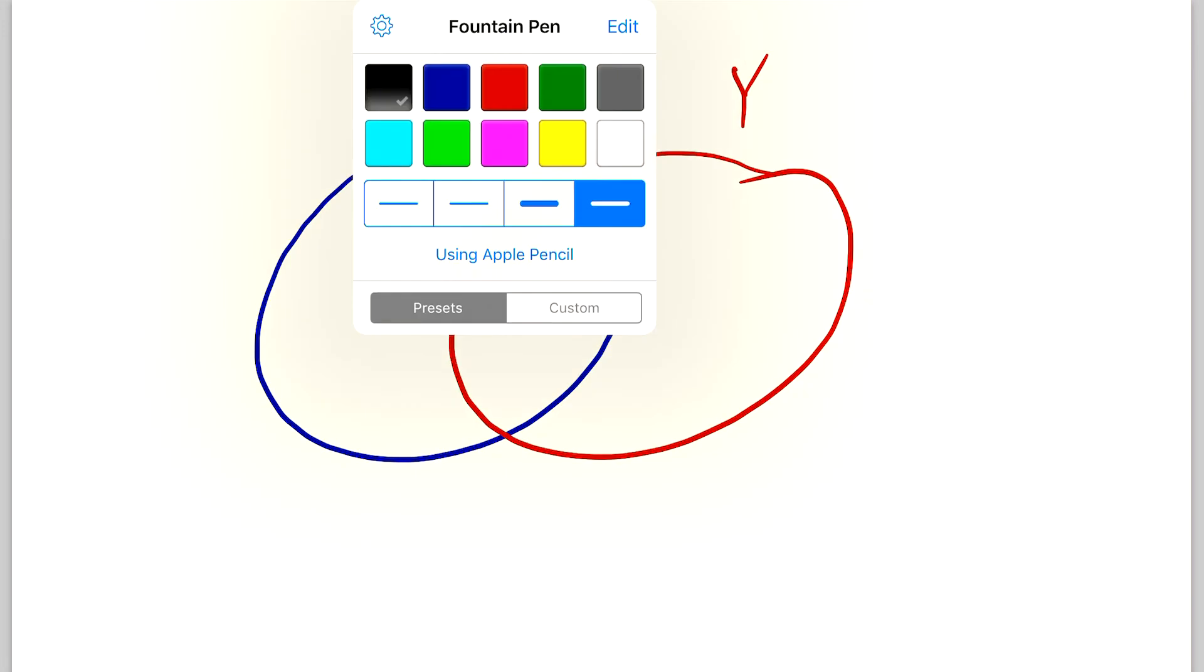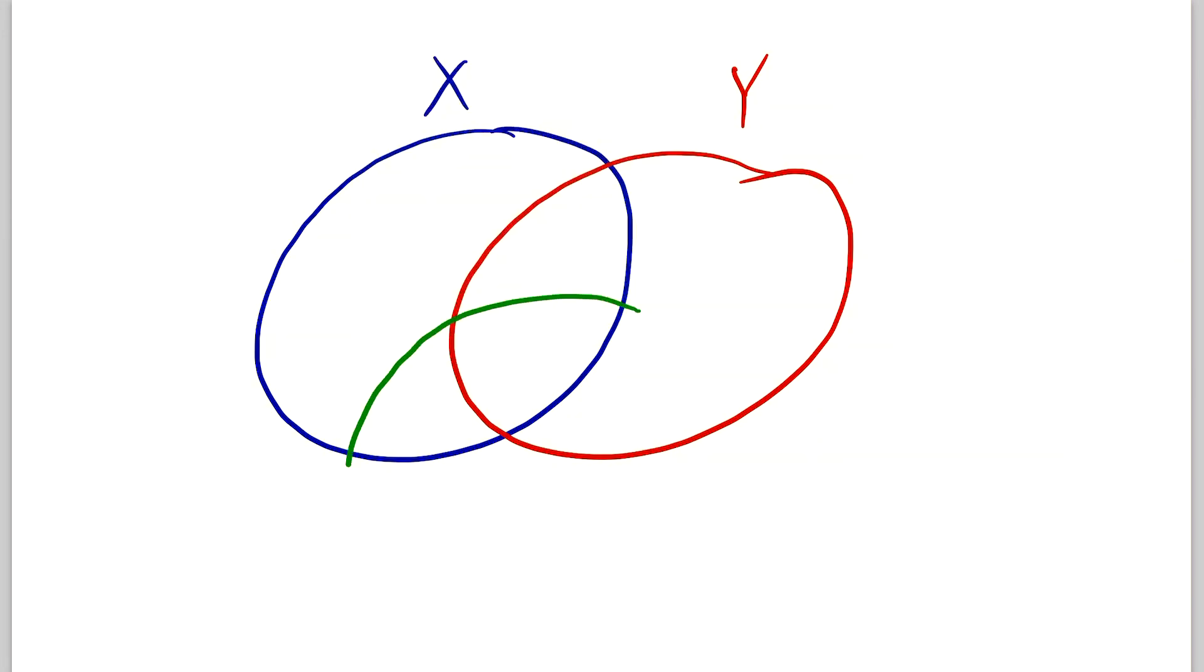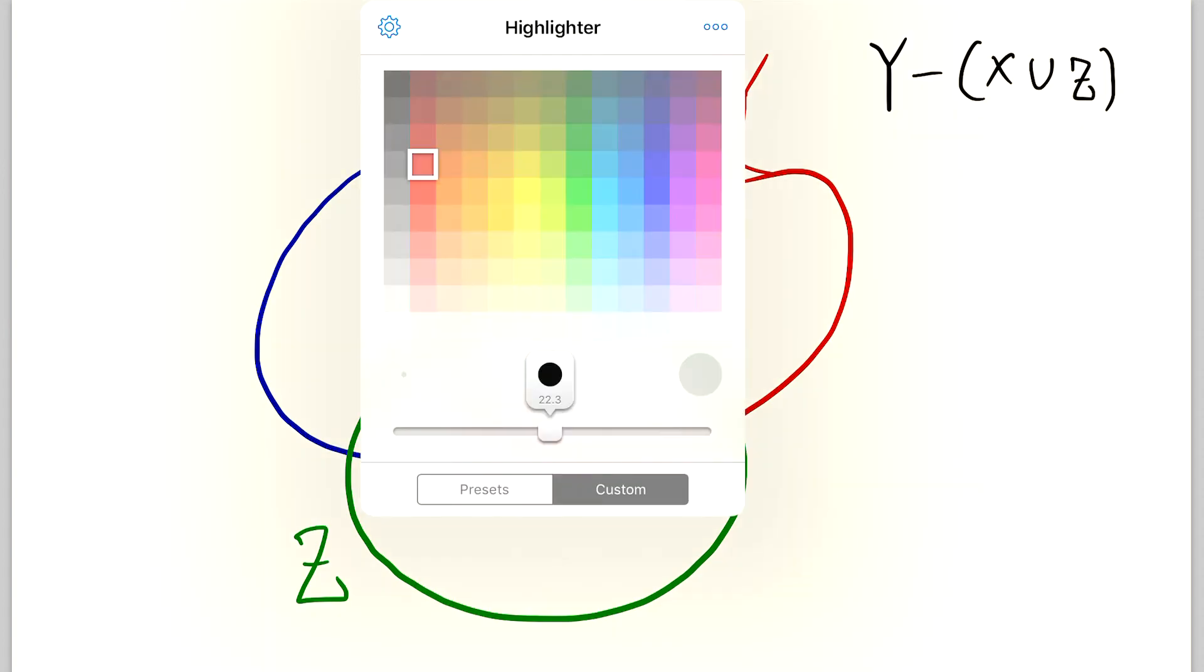So before we go, let's quickly look at one slightly more complicated example. We'll throw in a third set here called Z. Now let's say we want to shade Y minus X union Z. For starters, again, let's shade everything in Y, and we'll do this shading in red.